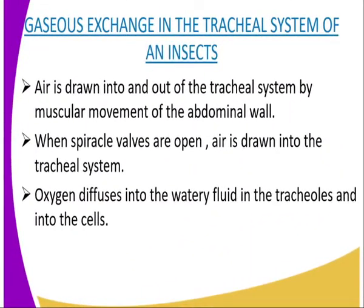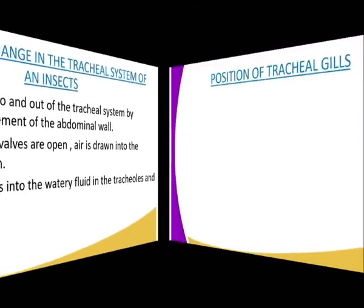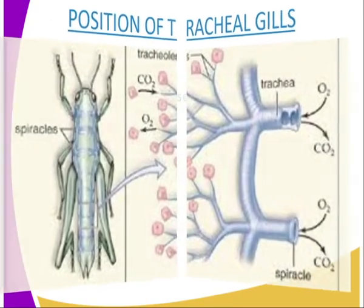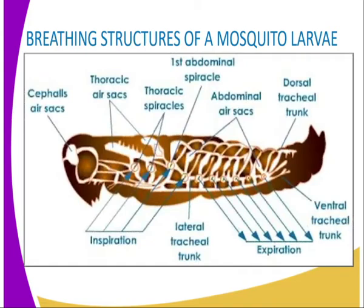Now we can go into the gaseous exchange in the tracheal system of an insect. Air is drawn into and out of the tracheal system by muscular movement of the abdominal wall. In wasps and bees, abdominal segments are moved in and out lengthwise, while in locusts and cockroaches the segments are moved laterally. When spiracle valves are open, air is drawn into the tracheal system. The valves then close and air is forced along the system by muscle movements. Oxygen diffuses into the watery fluid in the tracheoles and into the cells due to an oxygen diffusion gradient.